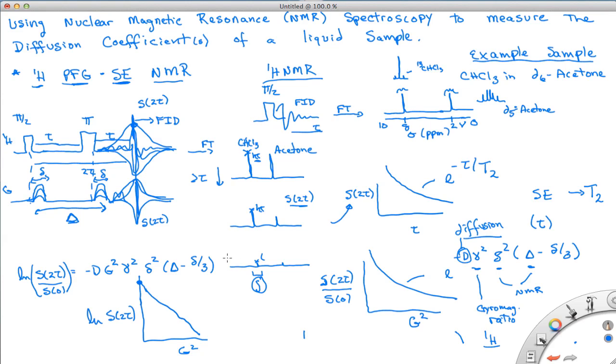Where it crosses the y-axis here, if we bring this over it'll be plus LN of S0, so this will be LN of the initial signal, and then the slope will be minus D gamma squared delta squared, big delta minus here.